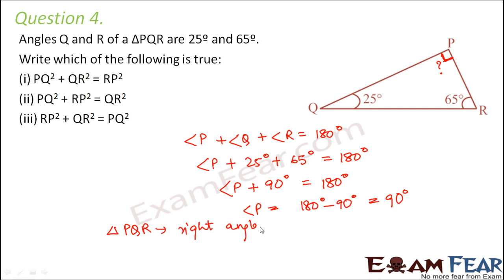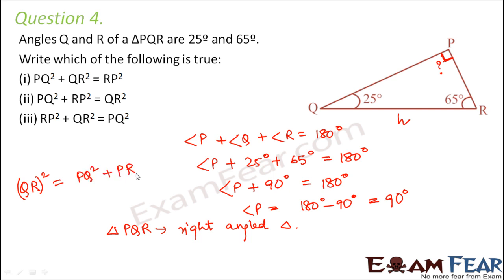So we find that angle P is 90 degrees, which tells us that triangle PQR is a right-angled triangle. Now in a right-angled triangle, as per Pythagoras theorem, the hypotenuse is the side opposite to the right angle. So QR square is equal to PQ square plus PR square. So this is true.